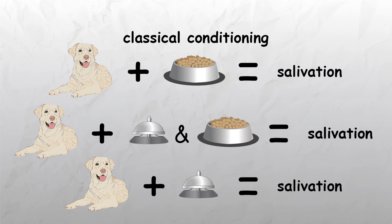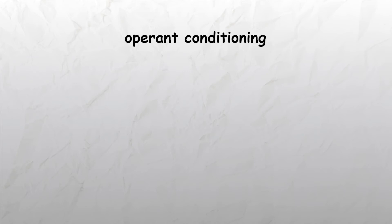For classical conditioning to occur, the neutral stimulus should be presented before the unconditioned stimulus frequently enough for an association to be formed between the two. When it does form, the sound of the bell becomes known as the conditioned stimulus, and the salivating in response to the bell as the conditioned response.